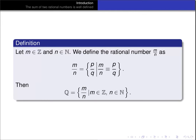If we have an integer m and a natural number n, then we define the rational number m over n — written with the single bar between the numerator and denominator — as the set of all fractions that are equivalent to the fraction m over n. So we're defining a rational number as the infinitely large set of equivalent fractions. The rational numbers Q is just the set of all rational numbers as we've defined them.